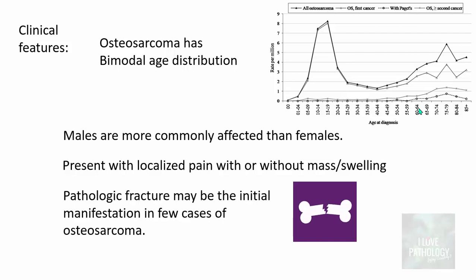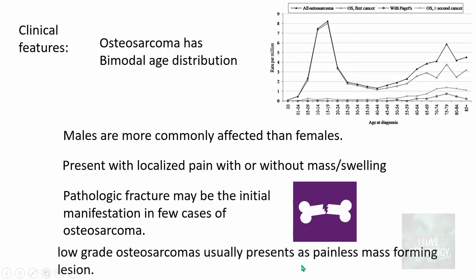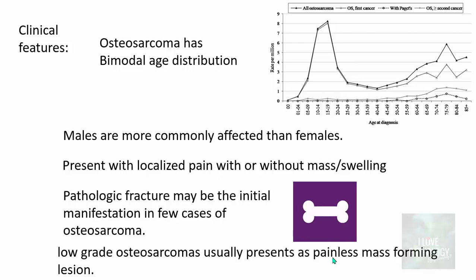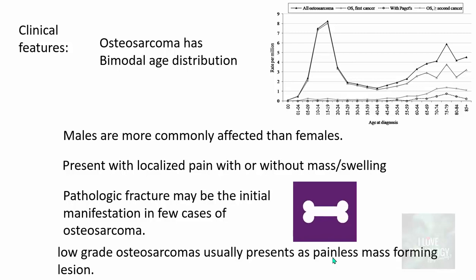Patients can present with either localized pain with or without a mass or swelling. At times, pathological fractures may be the initial manifestation in few cases. Low-grade Osteosarcoma usually presents with a painless mass-forming lesion, whereas high-grade Osteosarcoma presents most commonly with pathological fractures or pain.